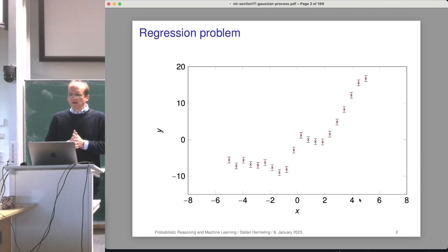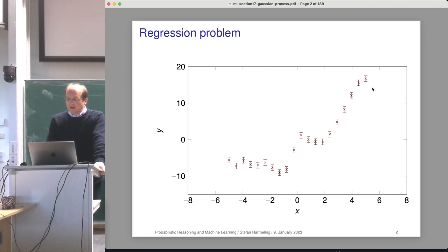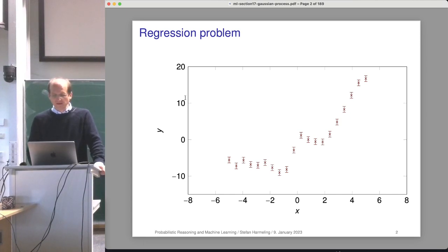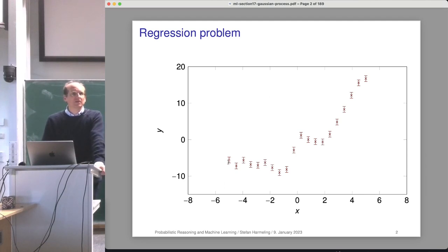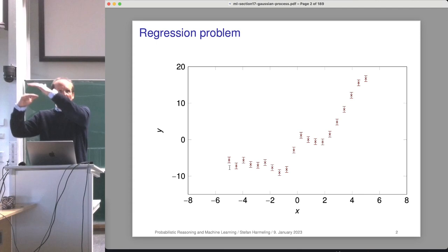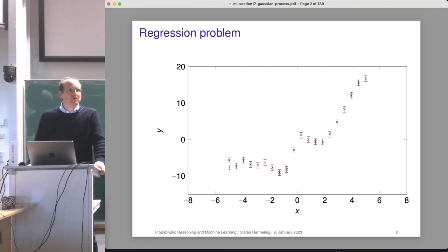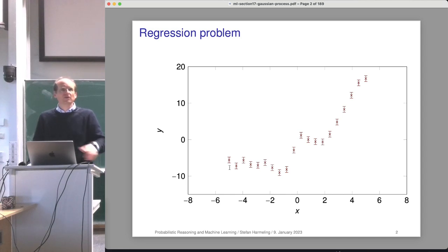We are talking about regression problems here in Gaussian processes. We are given a dataset with locations X and values Y, just like in the linear regression setting. Since we are in the Gaussian world, we also have little error bars around our measurements. We assume we know the variance of the noise — physicists sometimes know what the error bars of their devices are, and this knowledge can be used for Bayesian inference.